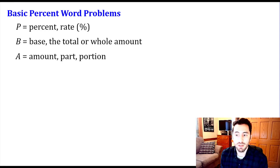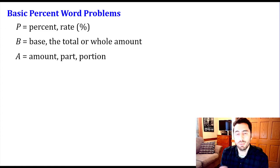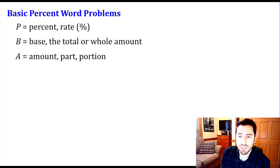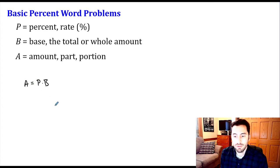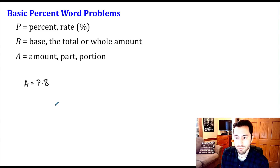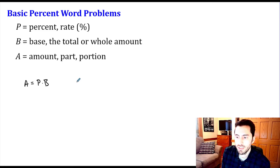And then we have the amount, the part, or the portion — what we're left with after we take the percent of our base. The relationship between these three variables is: if I take my base and multiply it by my percent, I end up with the amount. So the amount is what I'm left with after multiplying the percent by the base.